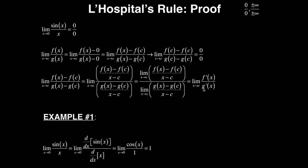In the simplest terms: if I have a limit like the limit as x goes to 0 of sin(x) over x, and when you plug in whatever x goes to it gives 0 over 0 or infinity over infinity — indeterminate form — all you do to evaluate it is take the derivative of the top, then take the derivative of the bottom, and keep doing that until you can evaluate it.